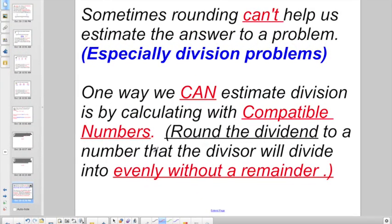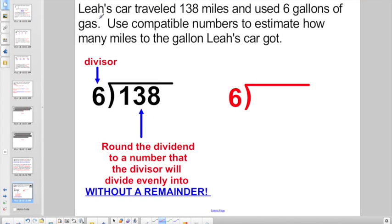Check this out. Hopefully you did not hit fast forward because this will put a roadblock on you. Sometimes rounding can't help us estimate the answer to a problem, especially division problems. One way we can estimate division is by calculating with compatible numbers. Basically, we're saying round the dividend to a number that the divisor will divide into evenly without a remainder. What are you talking about, Mr. Hines? Well, here's a sample problem. Leah's car traveled 138 miles and used six gallons of gas. And they want you to use compatible numbers to estimate how many miles to the gallon Leah's car got.